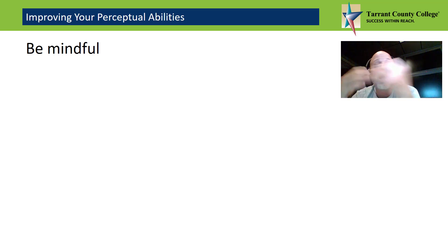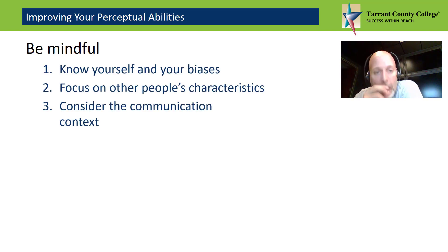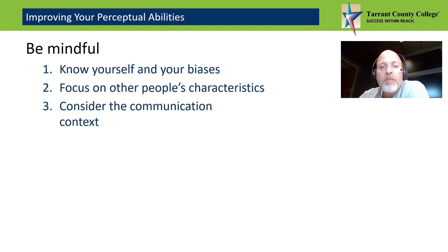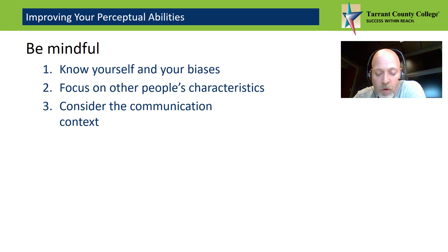Improving our perceptual ability starts with being mindful about how we perceive others. It involves checking the accuracy of perceptions. First, know your own biases — our individual characteristics often shape the way we perceive situations, so ask yourself how they are influenced by your personal attributes. Second, focus on other people's positive characteristics. And finally, consider how the context — like the express checkout line at Walmart or Target — influenced your perception.